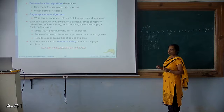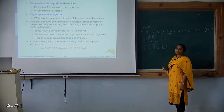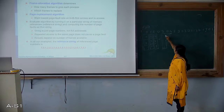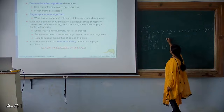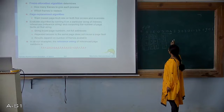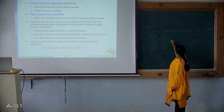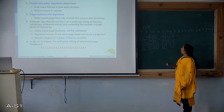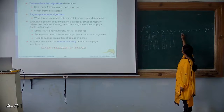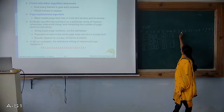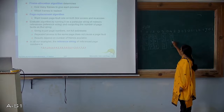Next, 0 is already present — no need of page replacement. 3 is required — replace the page not needed in the near future. 2 is going to be used soon, 0 is going to be used in the next reference, 1 is the one not needed in the near future — so replace 1 with 3. 2 is required, 0 is required — 1 is not needed soon — so replace the new entry with 1. 0 is present — no need of replacement. 4 is required — out of frames 2, 0 and 3, which is not needed soon? 0 is last to be referenced, so replace 0 with 4. Frames now hold 2, 4 and 3.